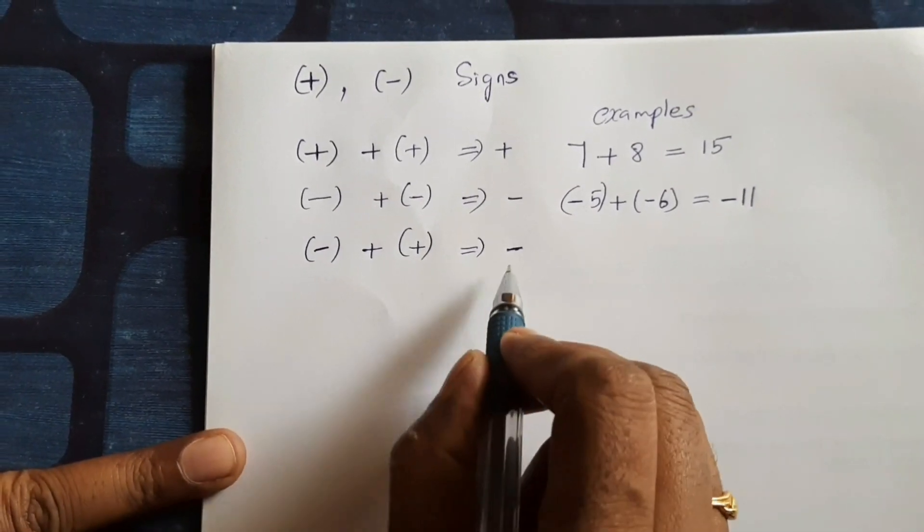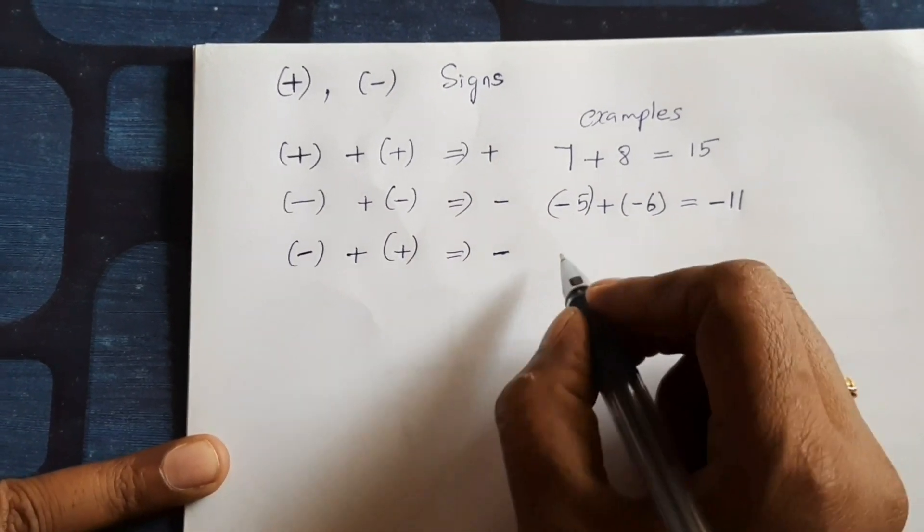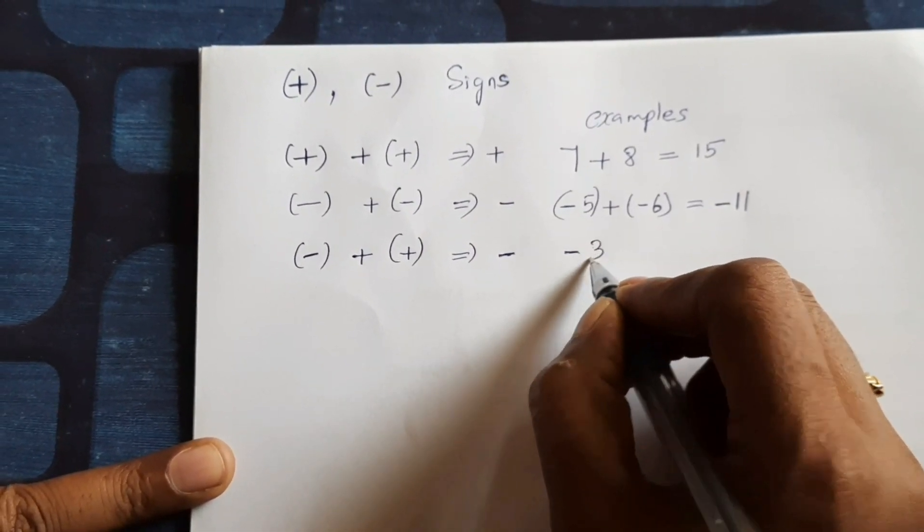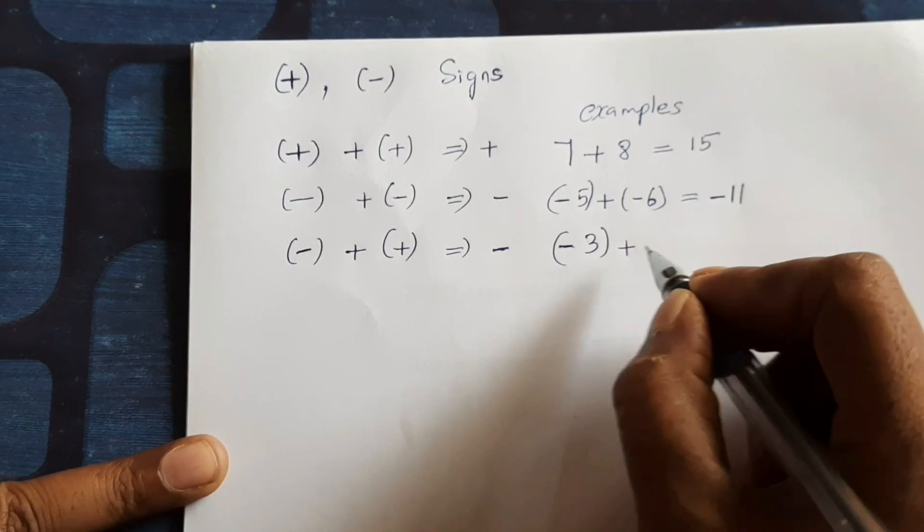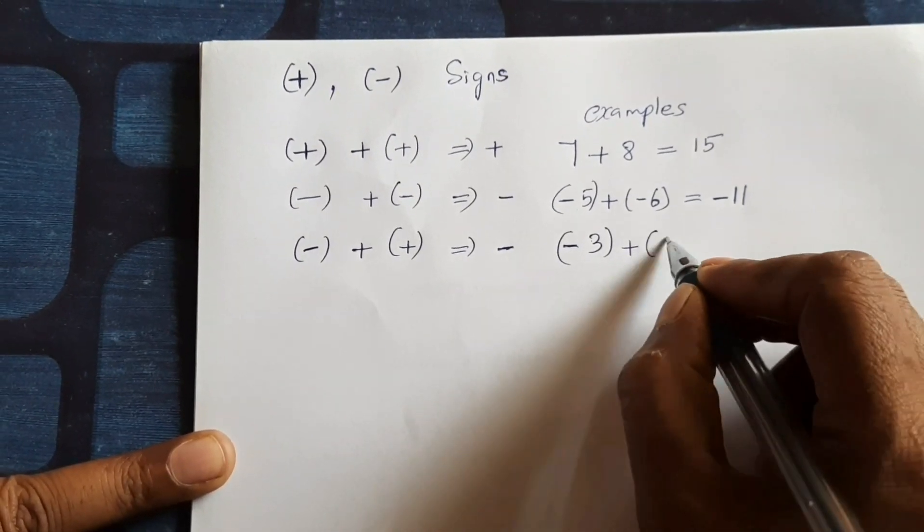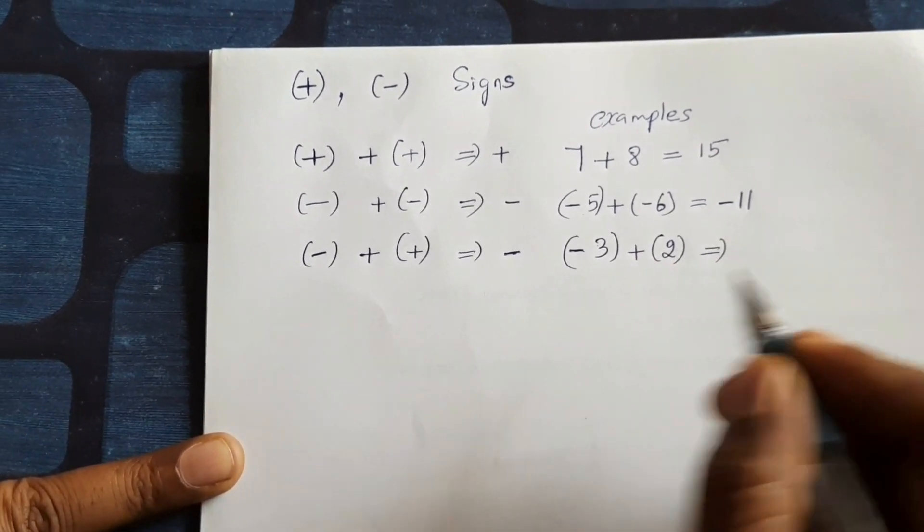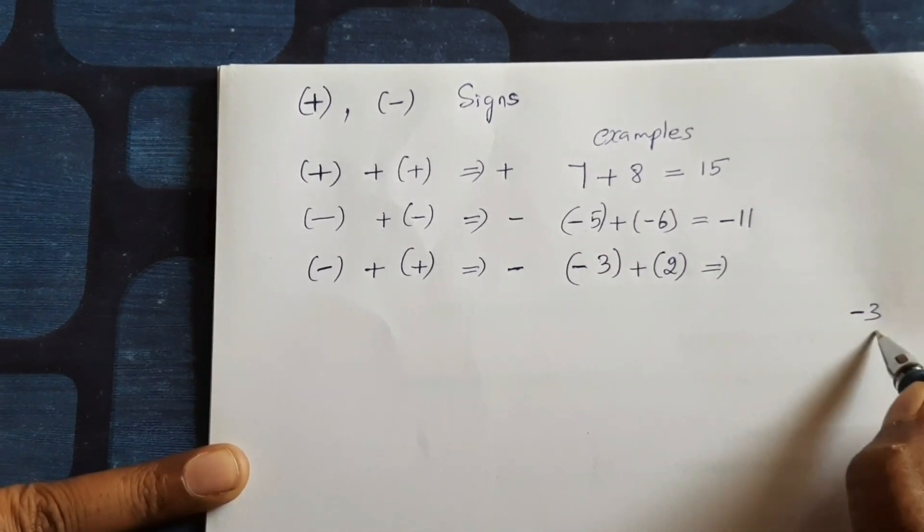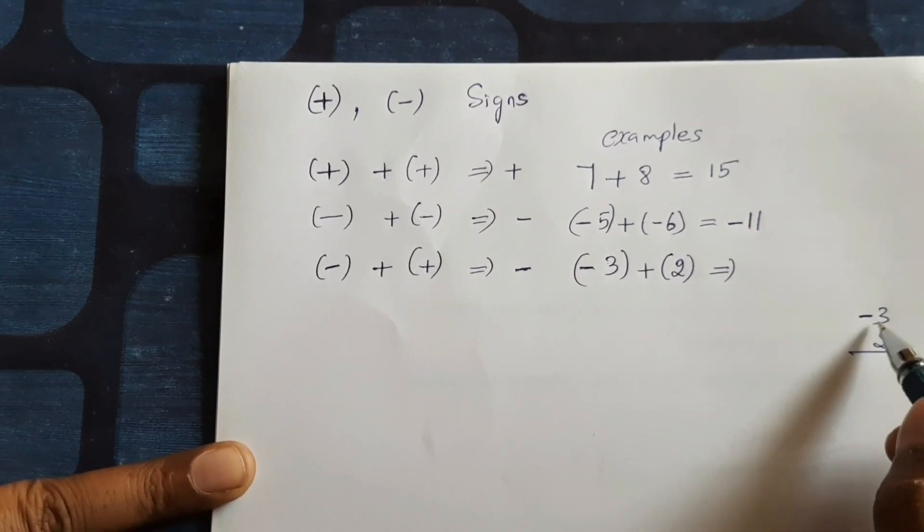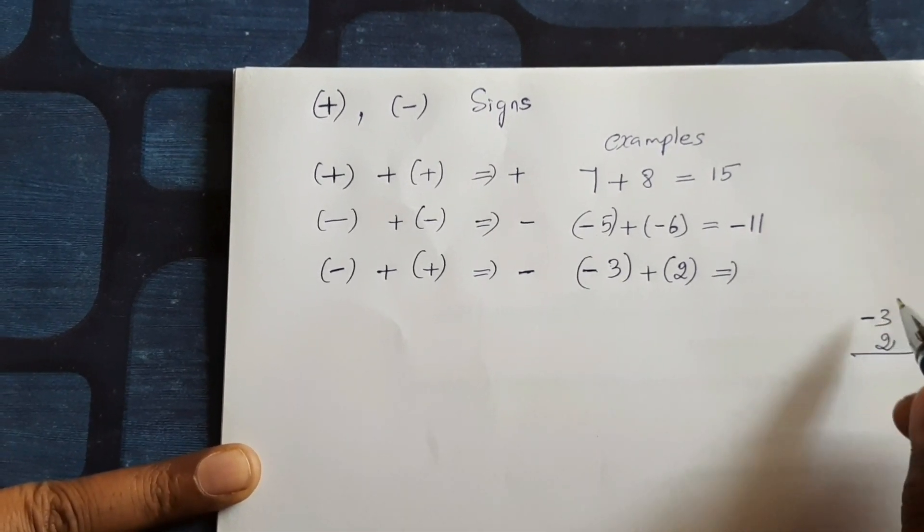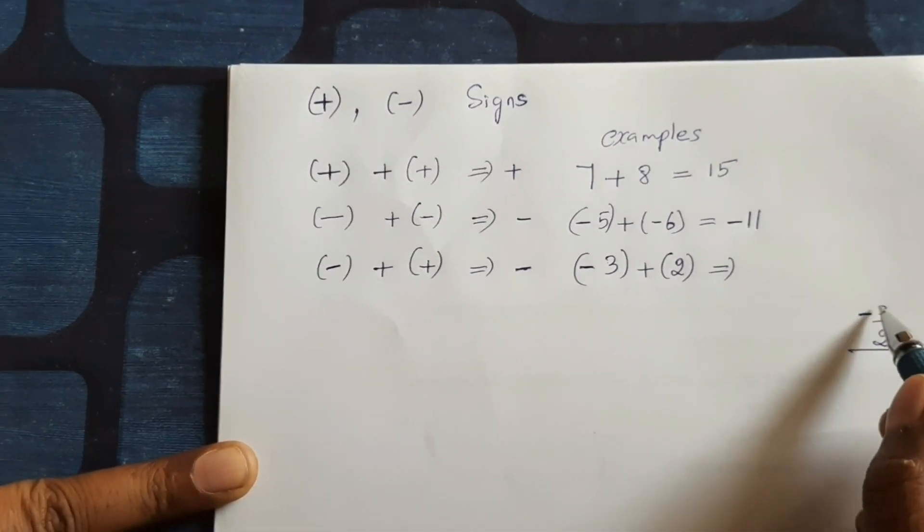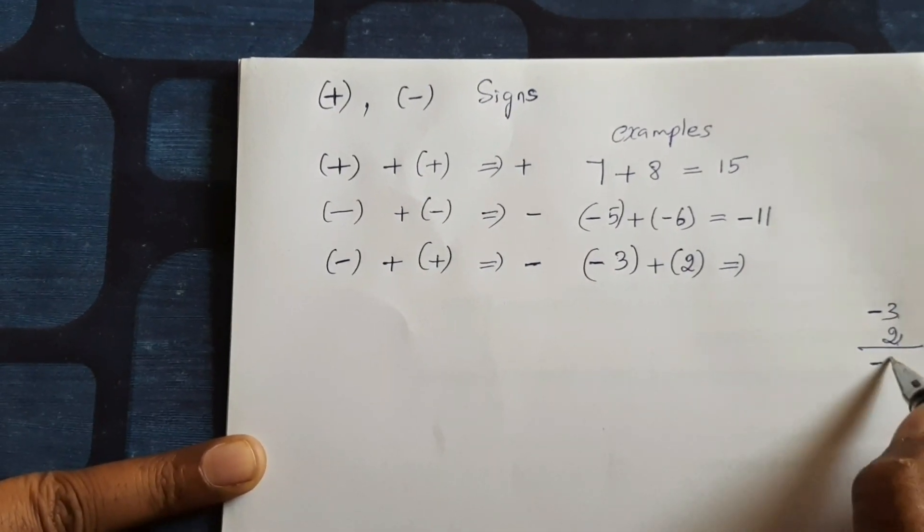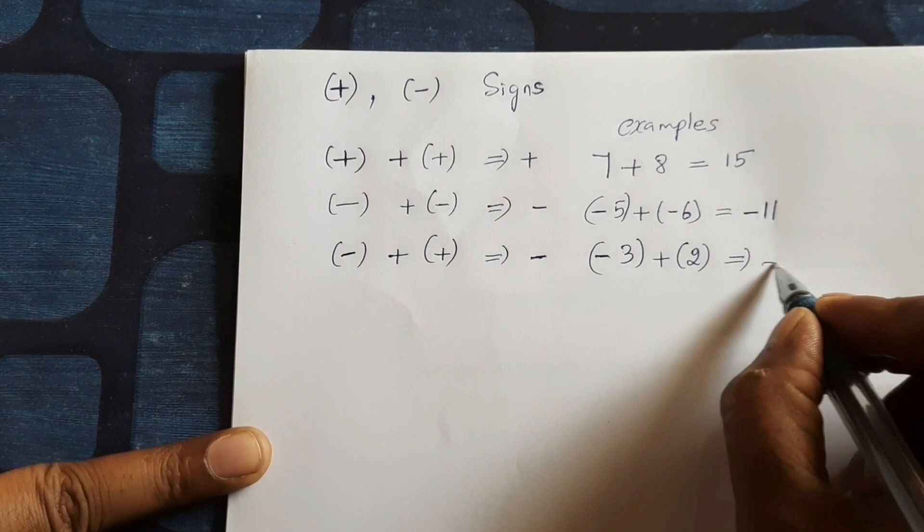Next minus plus plus, it gives minus. This is very, very important thing. Suppose minus 3 plus 2. It gives minus 3 plus 2. So negative sign is highest value. So we put negative sign 3 minus 2, 1. So minus 1.